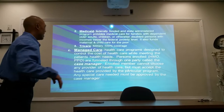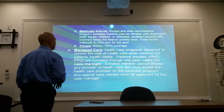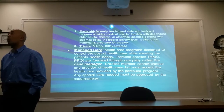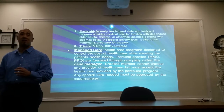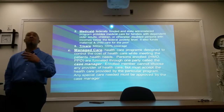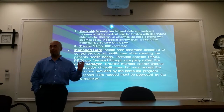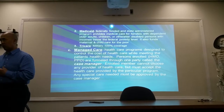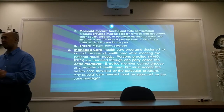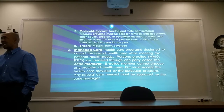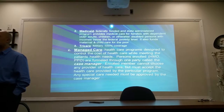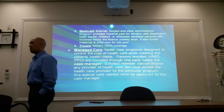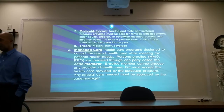Then you have Medicaid, which is a federally funded and state-administered program providing medical care for families with dependent older adults, children, or otherwise disabled persons with incomes below the federal poverty level. It also funds maternal and child care for the poor. Then you have TRICARE, which is 100% coverage for military or former military personnel.